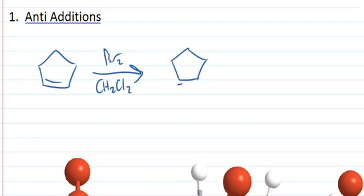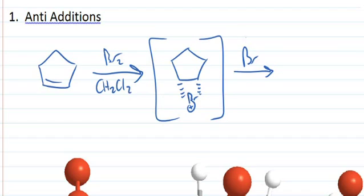We form a cyclic bromonium intermediate in bromination, followed by addition of a bromide anion in anti-fashion, kicking up the bromine.